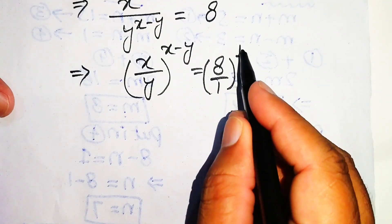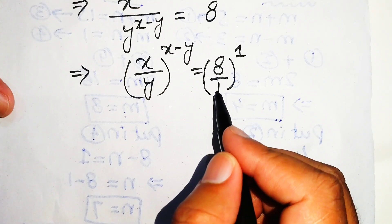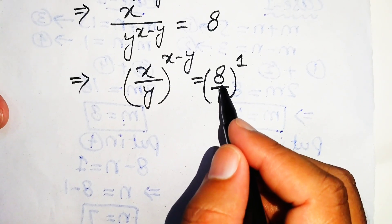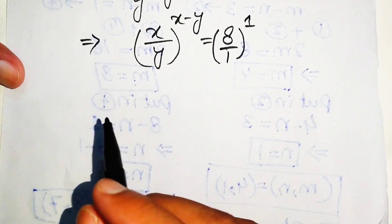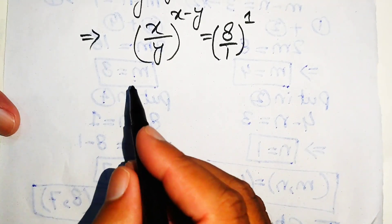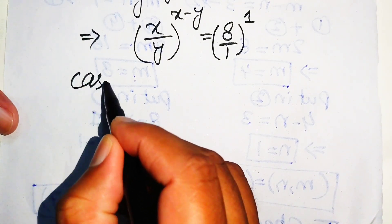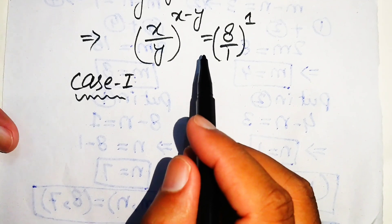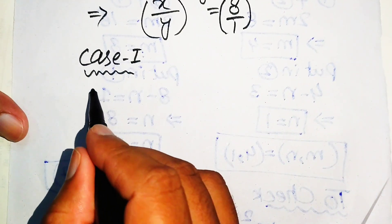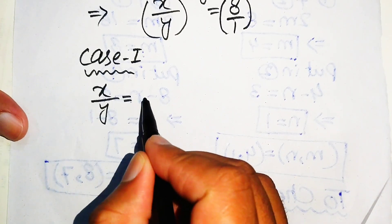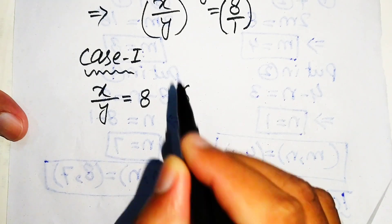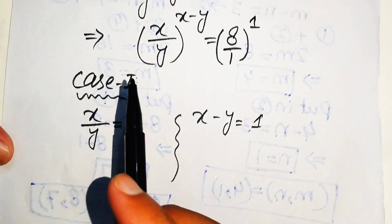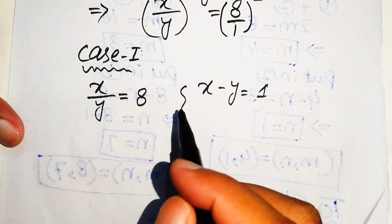We write 8 as 8 over 1 to the power of 1. Now in Case 1, we compare both sides by matching the base and the exponent. Comparing bases gives x over y equals 8, and comparing exponents gives x minus y equals 1.